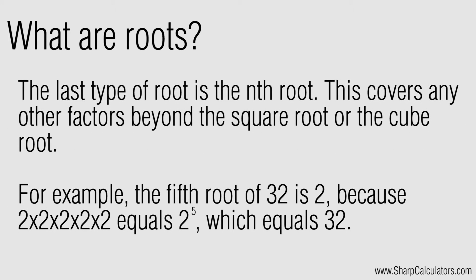The last type of root is the nth root. This covers any roots beyond the square root or the cube root. For example, the fifth root of 32 is 2, because 2 multiplied by itself 5 times equals 32.